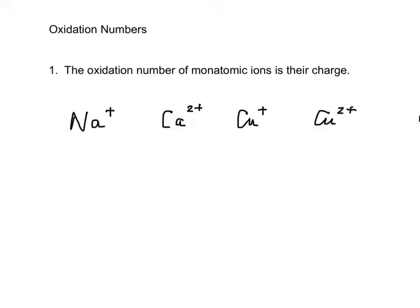The first rule is that the oxidation numbers of monatomic ions is their charge. So a monatomic ion is something like Na+. So Na+, the Na in there has a +1 oxidation number. In this case, it's the same as the charge. Calcium is +2, copper I is +1, copper II is +2.